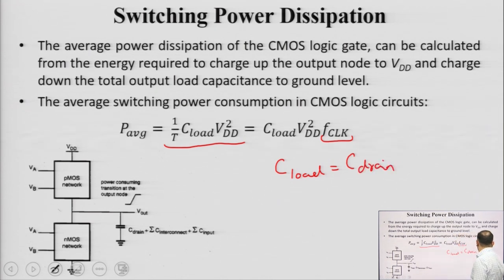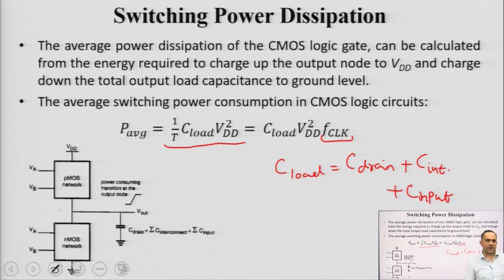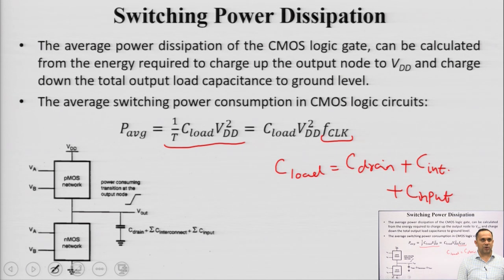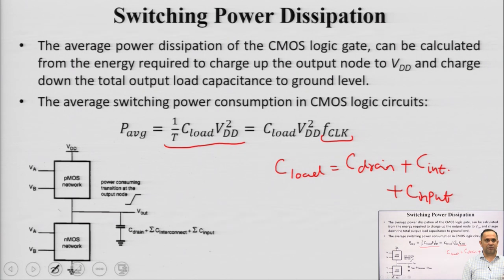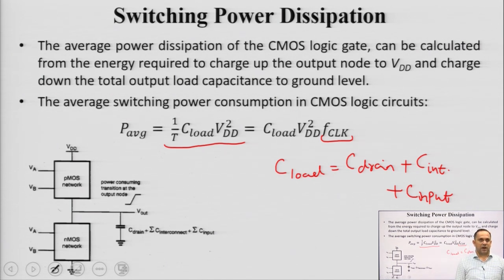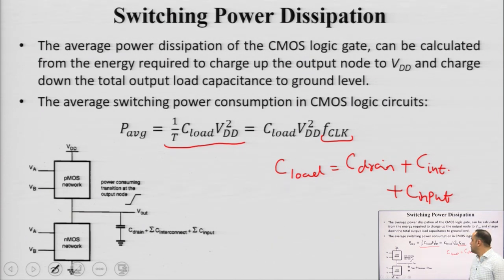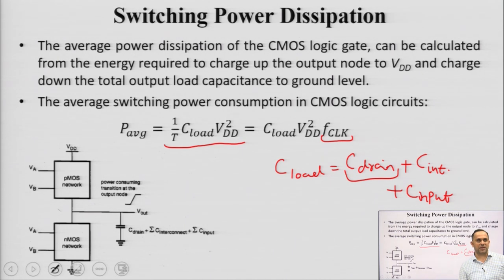The load capacitance has three components: drain diffusion capacitance, plus interconnect capacitance, plus input capacitance. Drain diffusion capacitances are parasitic capacitances at the drain junctions. Interconnect capacitance comes from the wires — two metal wires separated by dielectric produce capacitance. Input capacitance is the gate-source capacitance of all input electrodes. Of these three components, the drain diffusion capacitance has the maximum value, so most of the load capacitance comes from drain diffusion capacitance, giving the switching power dissipation when multiplied by V_dd² and clock frequency.